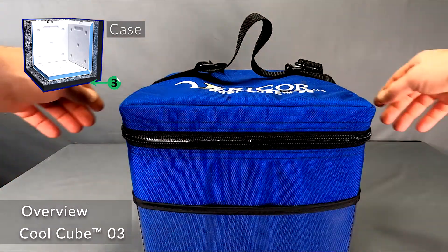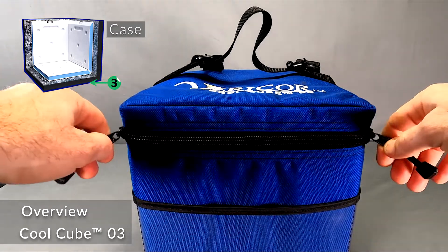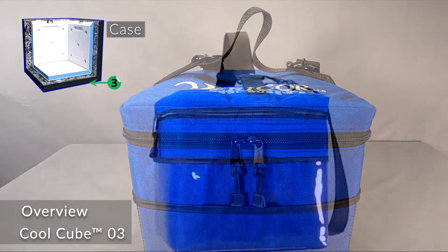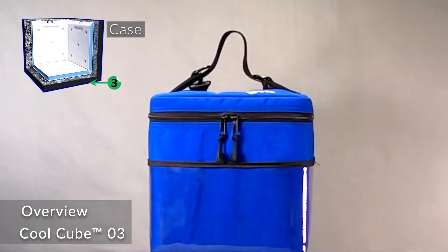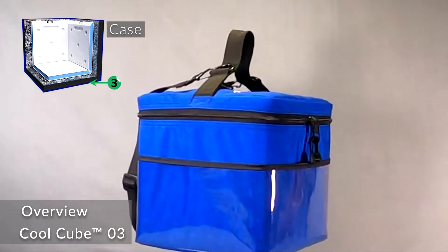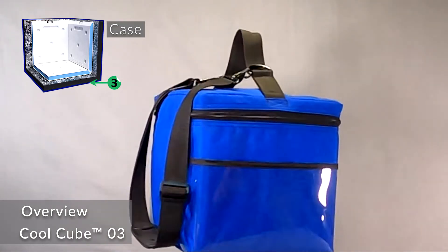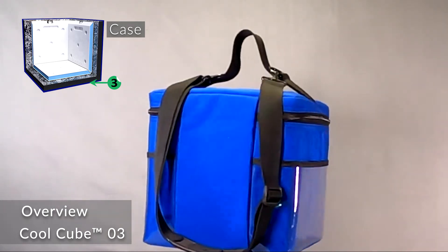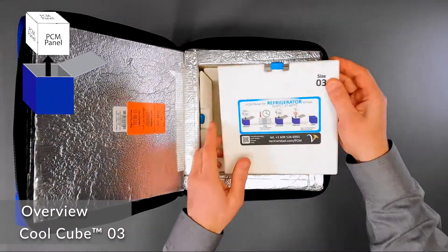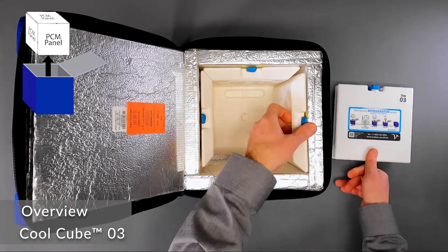The dual-zippered lid closes securely so the product can't fall out, and the integrated clear plastic external pockets are great for holding temperature monitors, paperwork, and pens while on the go. There are five simple steps in using the CoolCube 03.